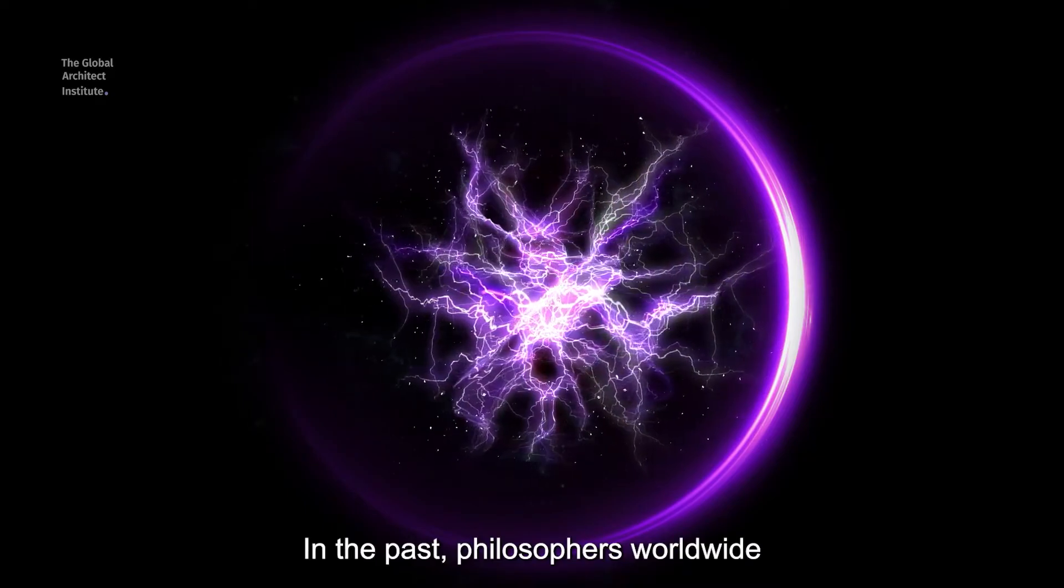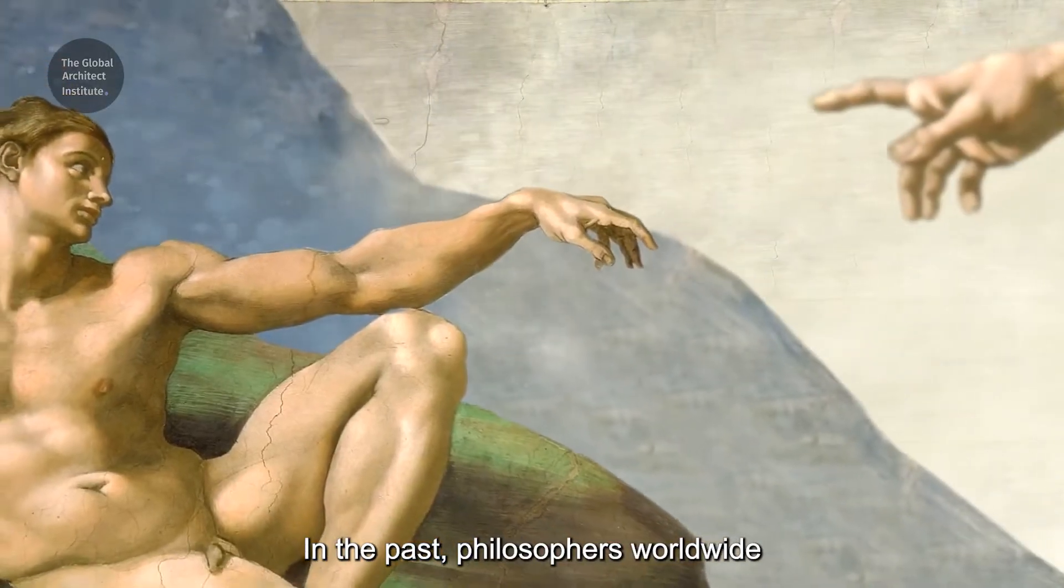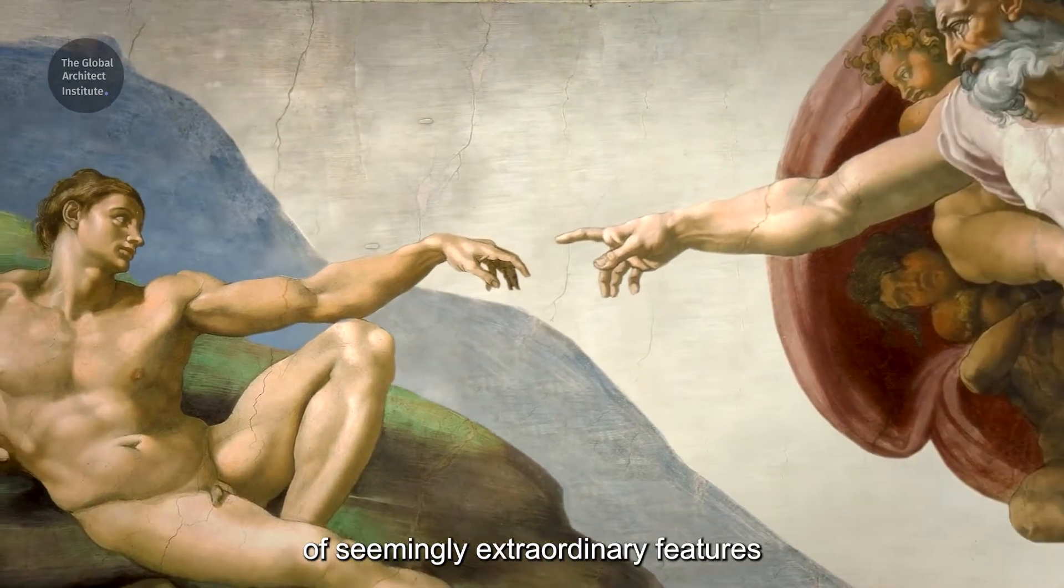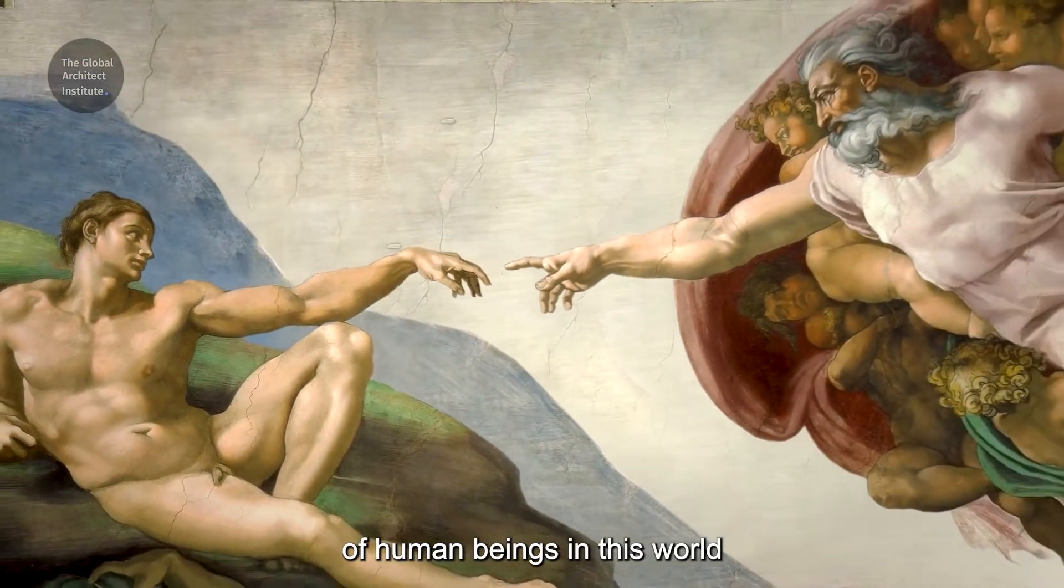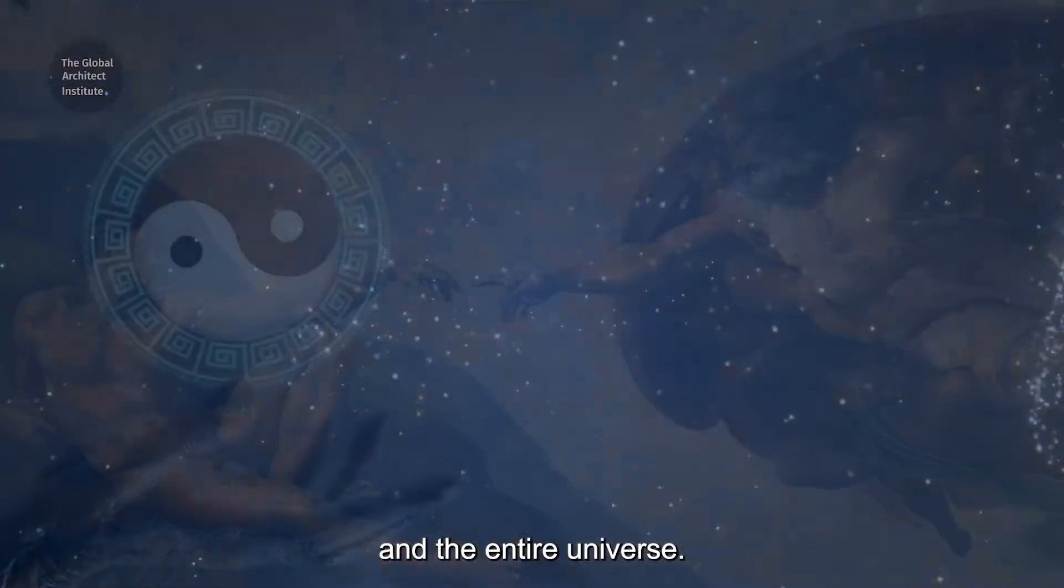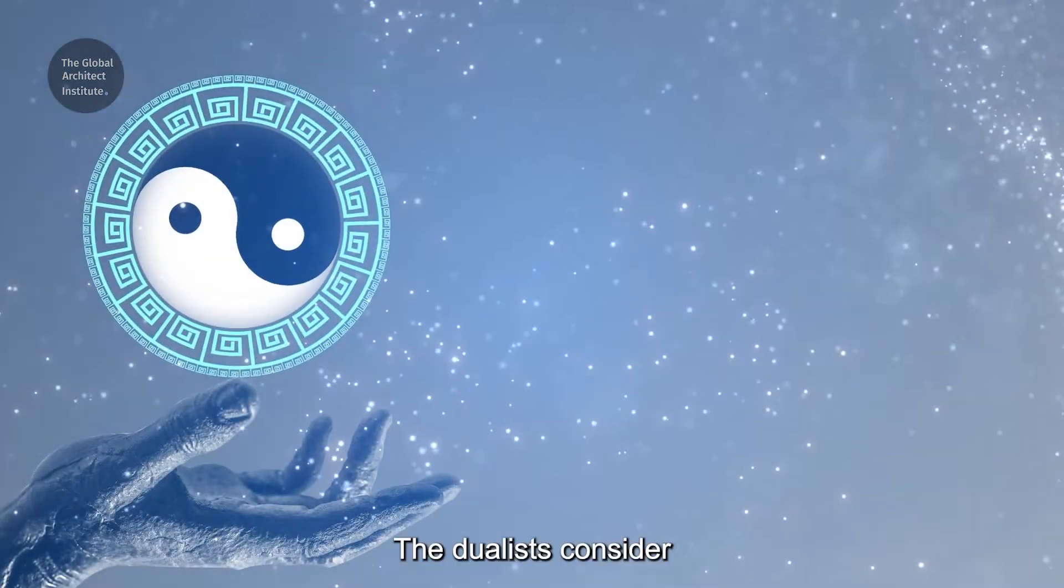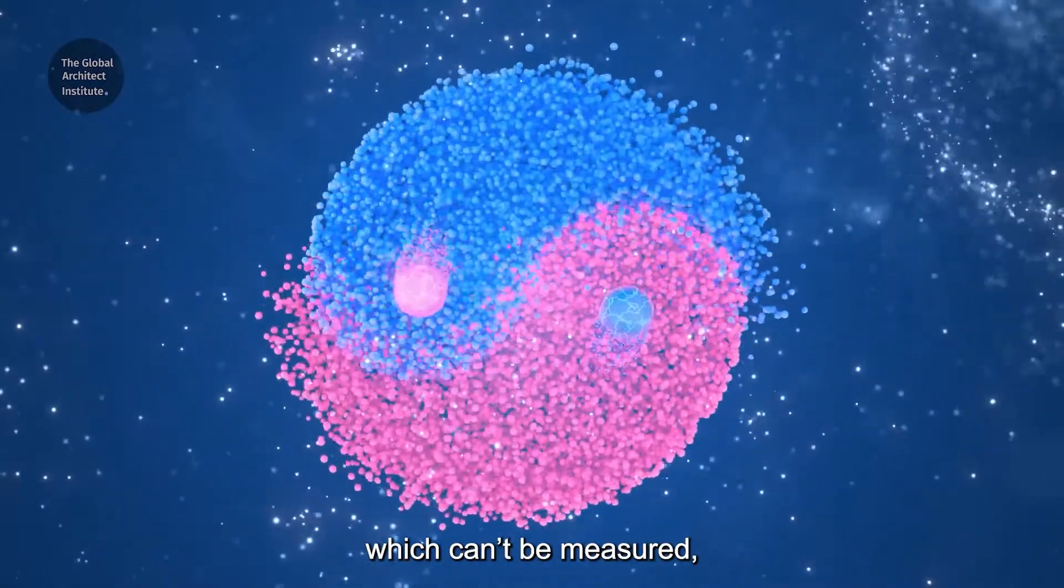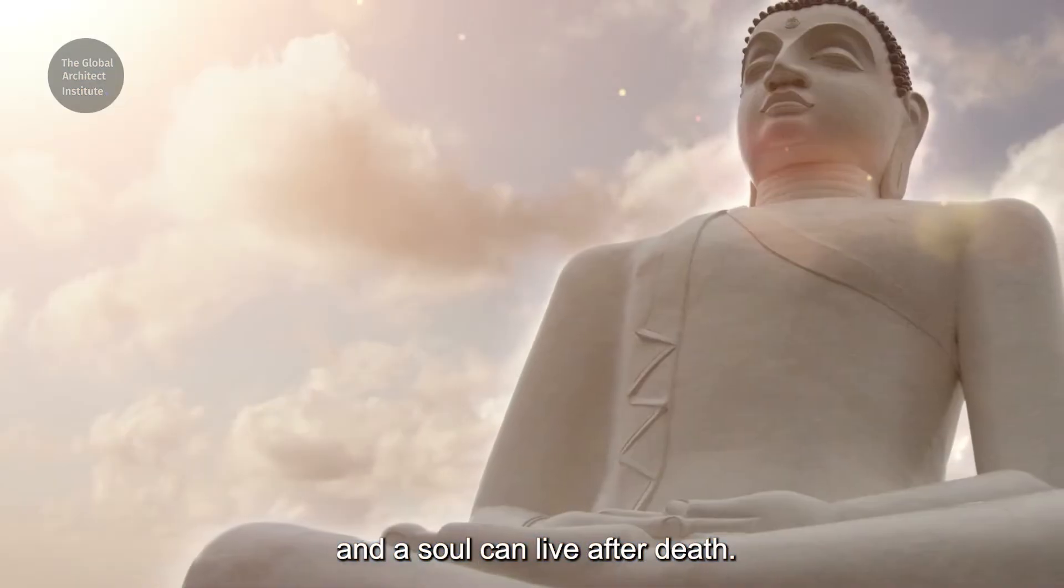In the past, philosophers worldwide have tried to give satisfactory record of seemingly extraordinary features of human beings in this world, and the entire universe. The dualists consider the mind to be a separate entity, and say that the mind is different, which can't be measured, and a soul can live after death.